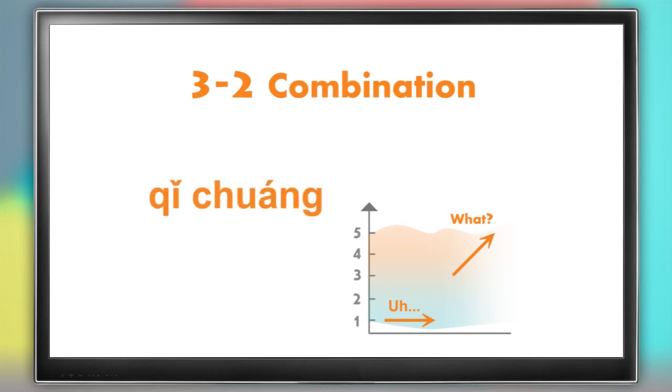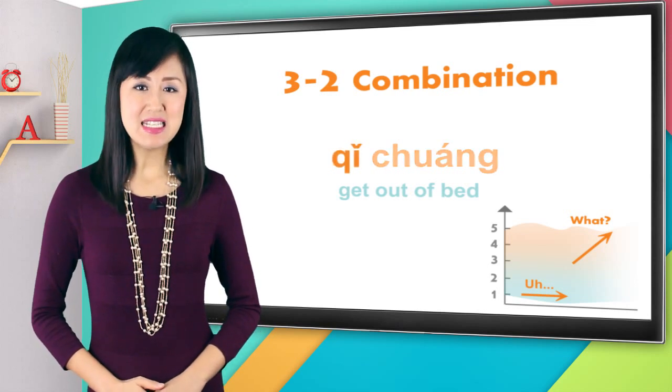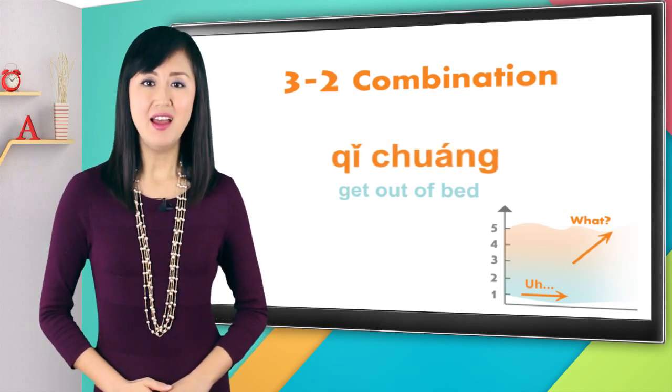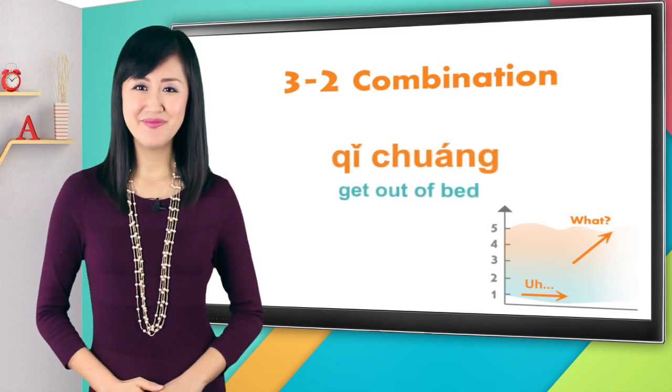qǐ chuǎng, a what? qǐ chuǎng means get out of bed, qǐ chuǎng, say it with me, qǐ chuǎng, a what? qǐ chuǎng, perfect.